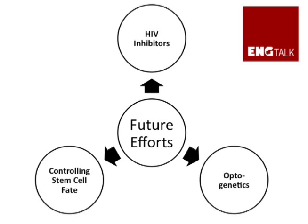In our labs, we are also applying the concept of polyvalency in a number of other efforts. One involves our attempts to increase the activity of HIV inhibitors using polyvalency. Secondly, polyvalency can not just be used to inhibit undesired interactions, but also to promote desired ones — for example, we are designing polyvalent molecules that can influence stem cell differentiation. Finally, we have been working in a new field called optogenetics, where we have helped develop a method that uses light to control the assembly of proteins into a polyvalent cluster, which in turn can control cellular responses. We are really excited about these research efforts. Thank you very much for listening.